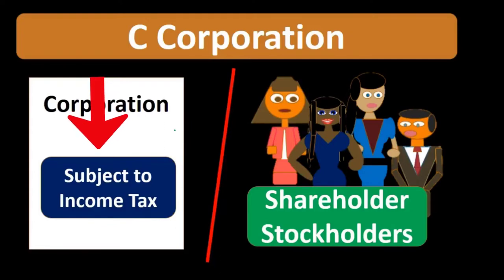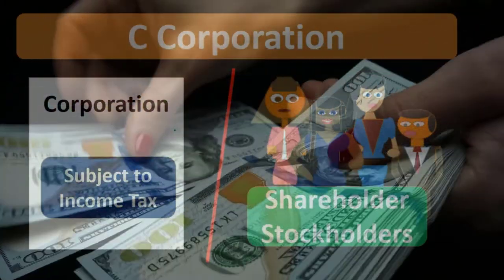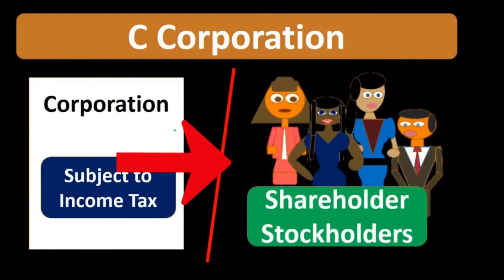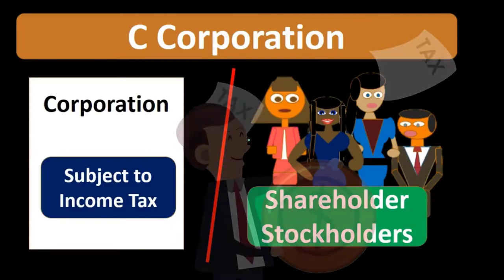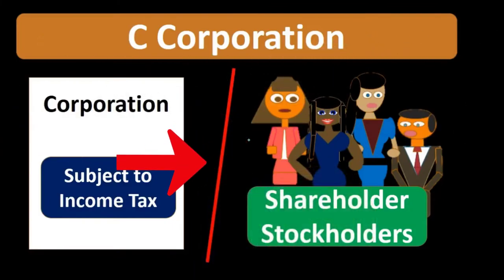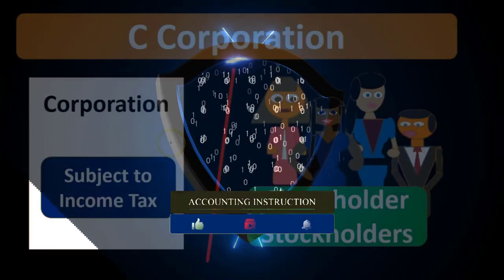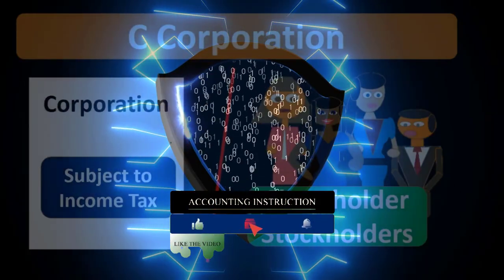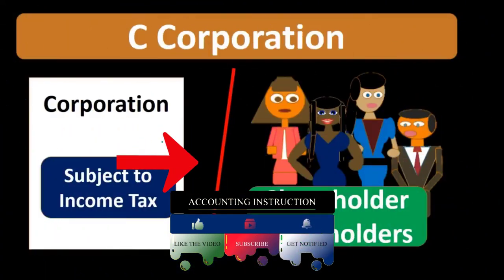Other types of entities exist to try to solve this problem. The reason it is a problem is that income is taxed on the corporate side, and then when the money is taken out of the corporation by the shareholders — in terms of a dividend distributed to shareholders — that dividend then gets taxed on the shareholder side, resulting in double taxation on the same income.